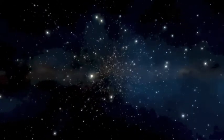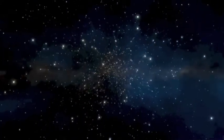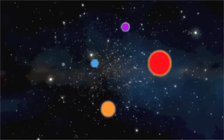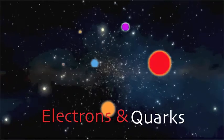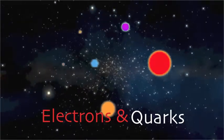For a fraction of a second after the Big Bang, there was no such thing as physics. But then particles started to form. Some of the tiniest particles we know of are electrons and quarks. But where did these particles come from?